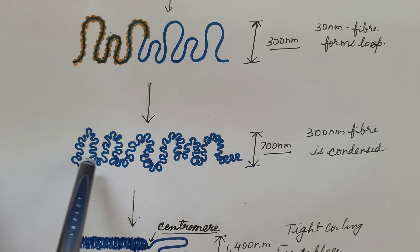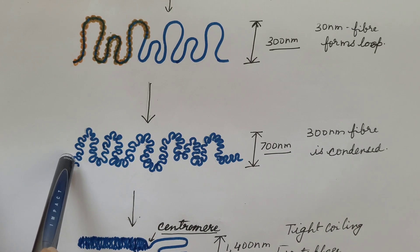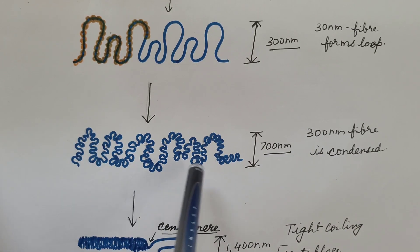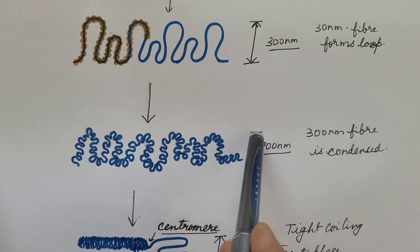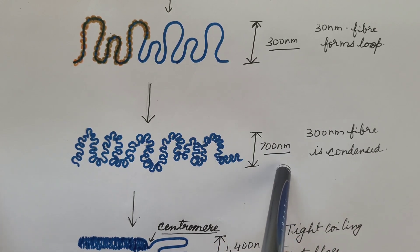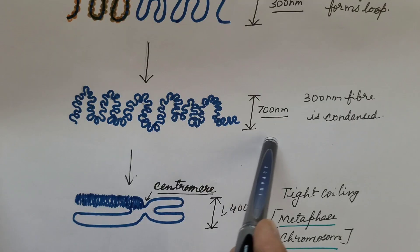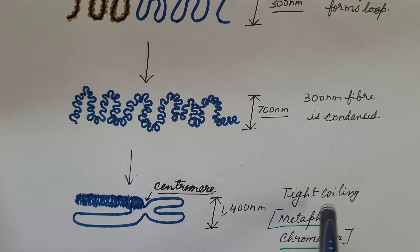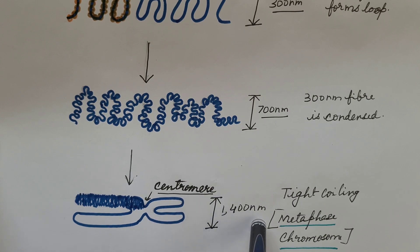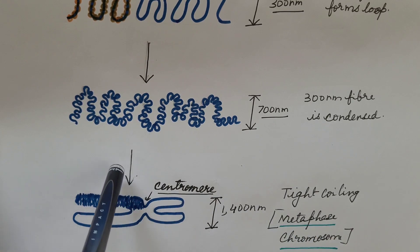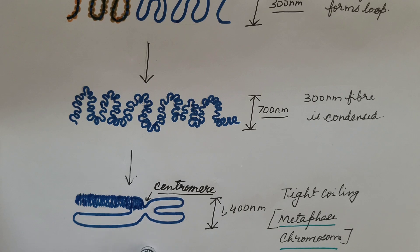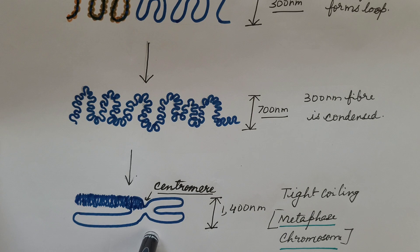The 300-nanometer fibers are further compressed and folded, becoming more condensed with a width of 700 nanometers. This 700-nanometer fiber is further tightly coiled to a width of 1400 nanometers. The chromosome that appears during metaphase is due to this level of packaging — this is the metaphase chromosome with its centromere.